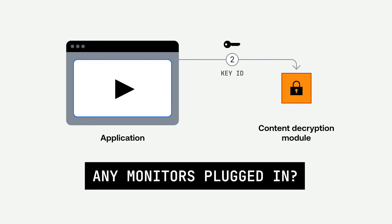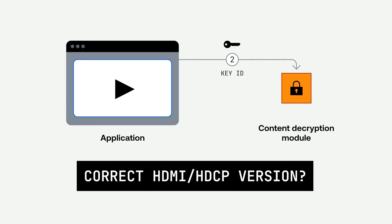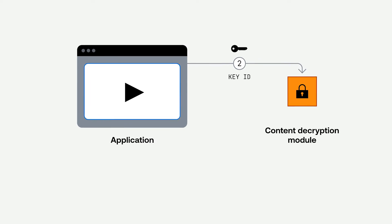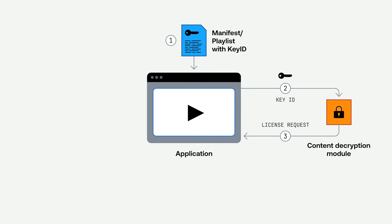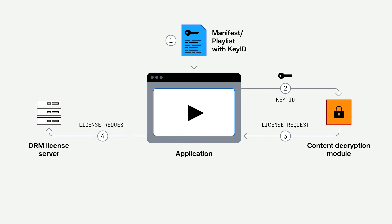Do you have any monitors plugged in? And if those monitors are plugged in, are they the right HDMI HDCP version? If all those things check out, it creates an opaque blob that the client can then send to the DRM provider.